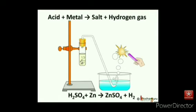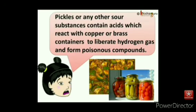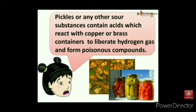An acid produces hydrogen in the reaction with a metal. We can say: acid plus metal gives salt and hydrogen gas. Now you can understand why sour substances are not kept in copper or brass containers. Pickles or any other sour substances contain acids which react with copper or brass containers to liberate hydrogen gas and form poisonous compounds. They can cause food poisoning and also corrode the container. So generally they are kept in glass jars or clay containers.